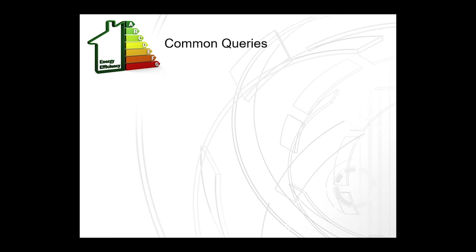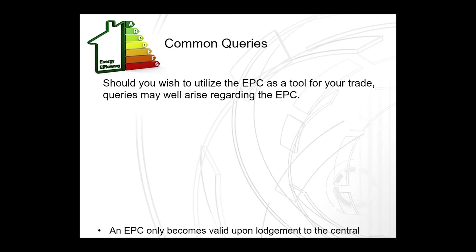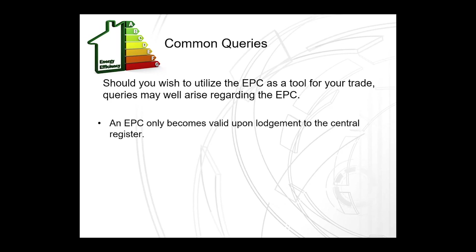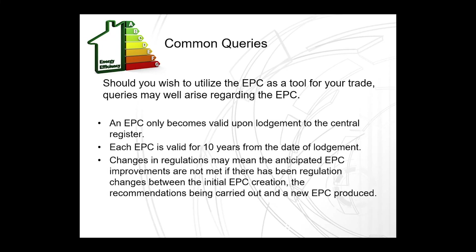If you're going to assist the homeowner to understand the content of the EPC and carry out some works recommended within it, you'll almost certainly come up against some queries from either the tenant, the landlord or the homeowner. An EPC only becomes valid upon lodgement to the central register. Each EPC is valid for 10 years from the date of lodgement. Changes in regulations may mean that anticipated EPC improvements are not met if there have been regulation changes between the initial EPC creation, the recommendations being carried out, and the new EPC produced.